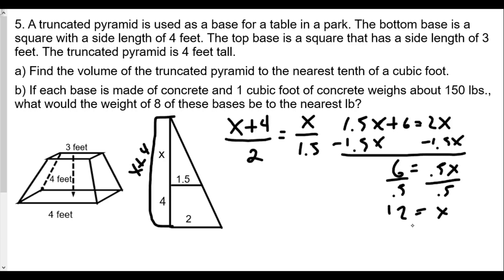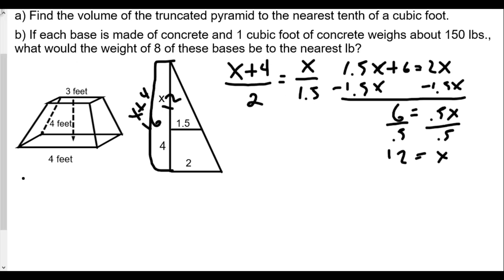Therefore, this measurement for the height of the small pyramid is 12 and the large pyramid would be 16. Very similar to what we did before: volume of the big pyramid minus volume of the small pyramid equals the volume of the truncated pyramid. The volume of the big pyramid is one-third base area times height. The base area is a square with edge 4, so it's 4 squared times the height which is 16.